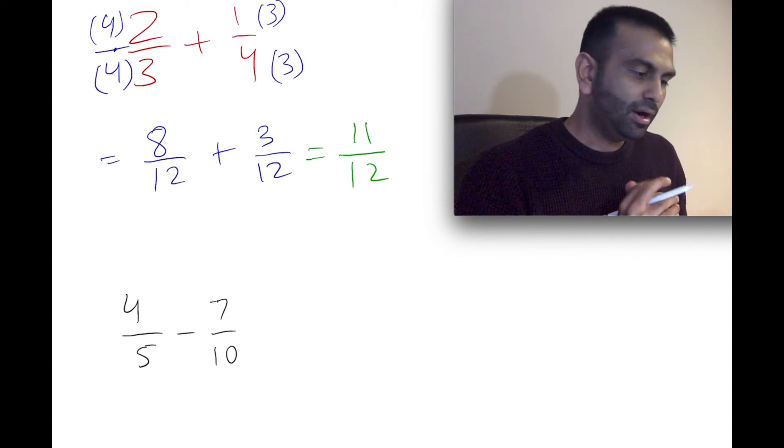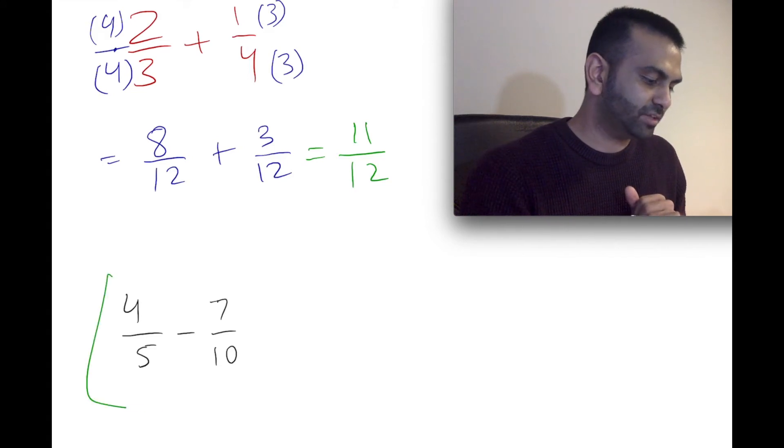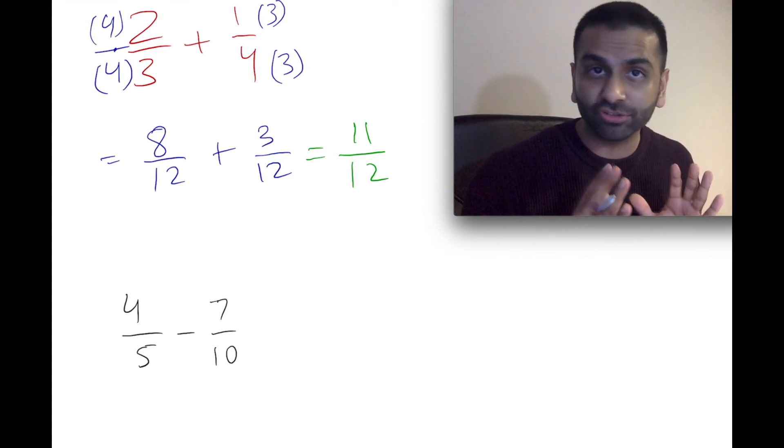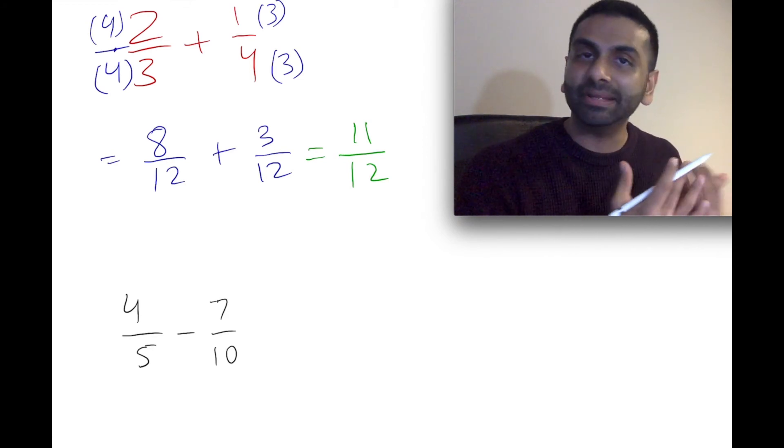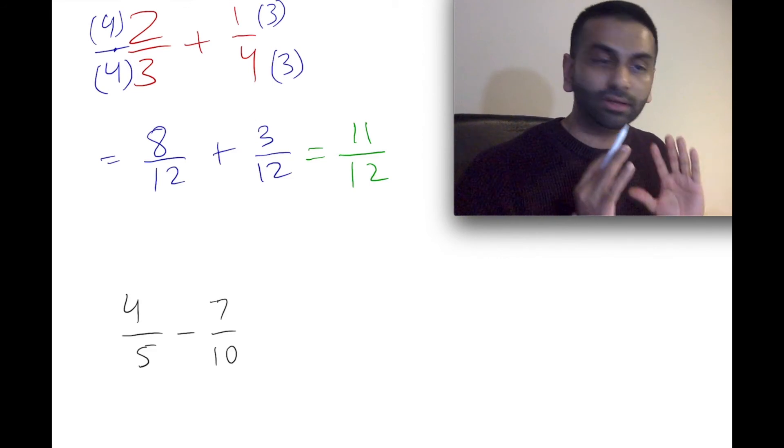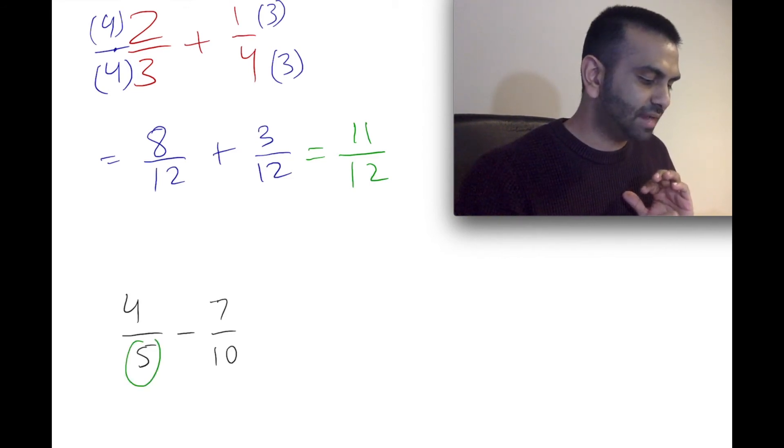All right, now, how do we do a subtraction? To subtract two fractions, you're basically going to do the same procedure. Step one, make sure the denominators are the same. And then, step two, keep the denominator the same and just subtract the numerators. So, all right, to make these two denominators the same, let's see, one of them is 5, the other is 10.